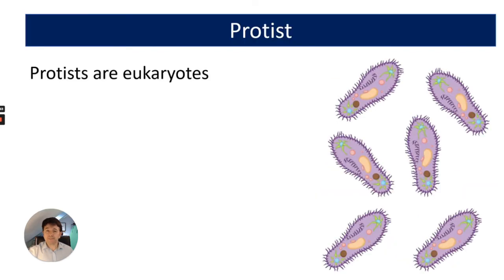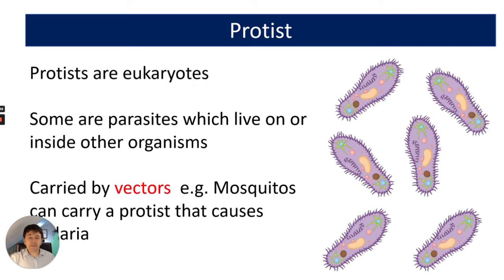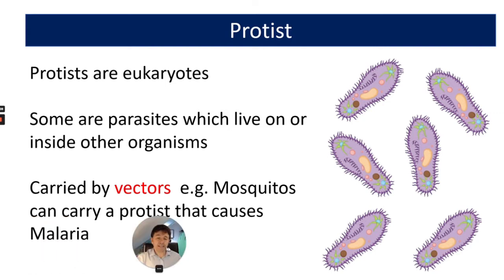Protists are eukaryotes. Some are parasites which live on or inside other organisms and they're carried by vectors. For example, mosquitoes can carry a protist that causes the disease malaria.